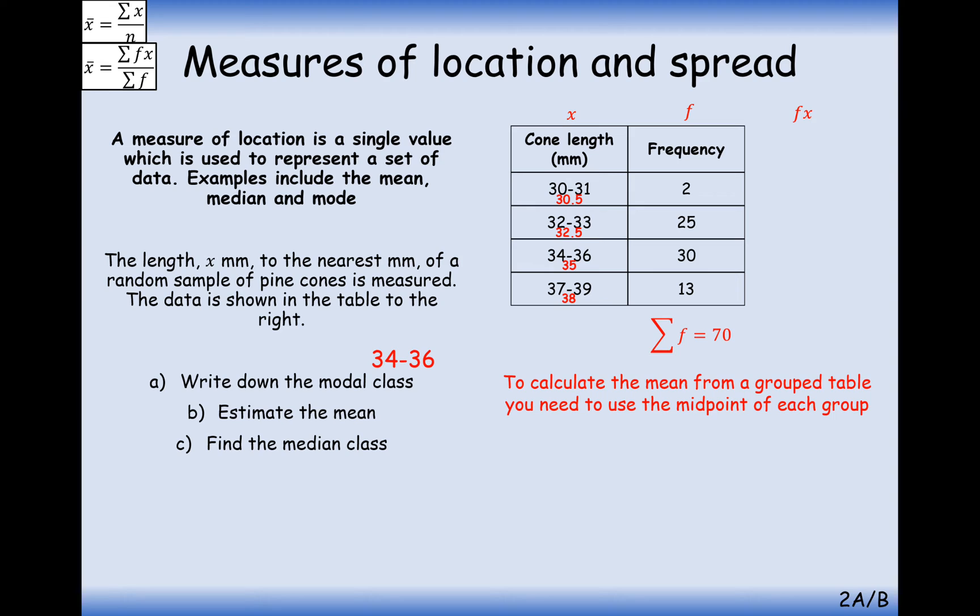And then what we do is we do the midpoints times by the frequency here. So it's fx equals 30.5 times 2 is 61. 32.5 times 25 is 812.5. 35 times 30 is 1050. 38 times 13 is 494. And then we sum those up together.